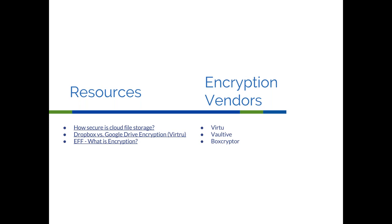Some resources: the EFF — Electronic Frontier Foundation — has a 'What is Encryption?' walkthrough that's a bit more detailed than what I talked about, and also covers SSL certificates and HTTPS, the secure web things that I left out today for reasons of time. There's a 'Dropbox versus Google Drive Encryption' blog post from Virtru from a couple weeks ago. 'How Secure is Cloud File Storage' is a useful one as well. And I've listed a couple of encryption vendors — this is not in any way an endorsement, although we've had good success using Virtru, and I've certainly heard people have good experiences with Boxcryptor.